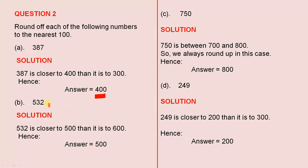The next one is 532. 532 is closer to 500 than it is to 600. So 532 to the nearest 100 is 500.